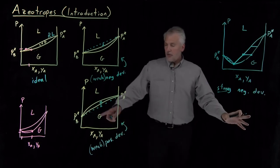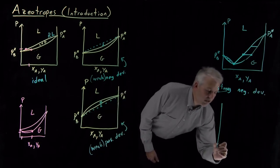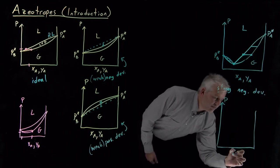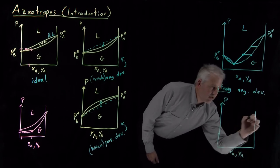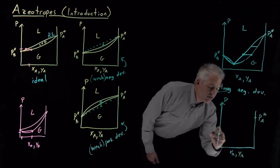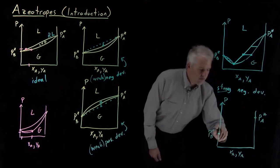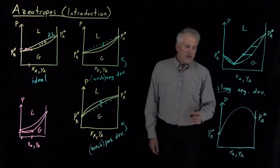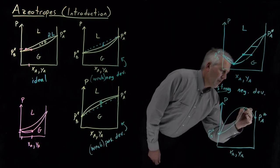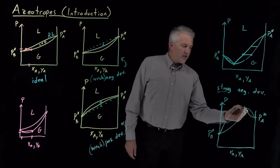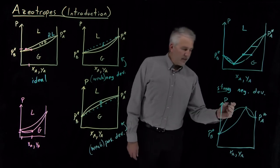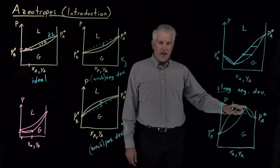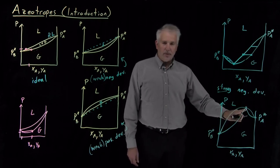I can draw a similar curve over here for strongly positive deviations. So pressure and composition, vapor pressures of the pure components. Instead of the straight line Raoult's law behavior connecting the two of them, I might have very positive deviations from Raoult's law. But again, if this curve exhibits a maximum, if in this case, the bubble point curve exhibits a maximum, the dew point curve is going to have its maximum meet at exactly the same place.